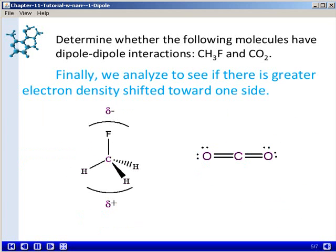And then finally, we analyze to see if there's greater electron density shifted toward one side or the other of the molecule. In the case of CH3F, we know that fluorine has a very high electronegativity and pulls electron density towards itself, so the top of the molecule as it's drawn here would develop a partial negative charge because of electron density being pulled toward the fluorine.